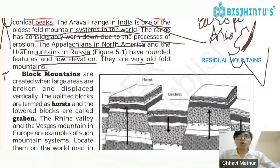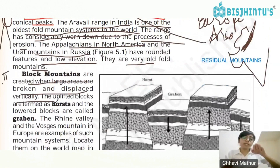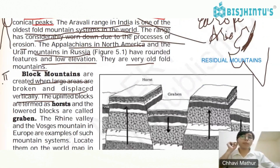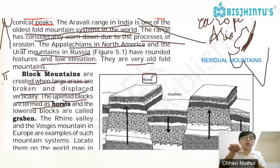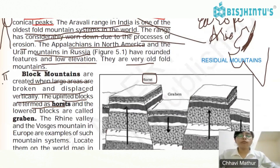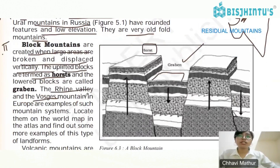Block mountains are created when large areas are broken and displaced vertically. The uplifted blocks are termed horst, and the downward-dropped portions are called graben. The Rhine Valley and the Vosges mountains in Europe are examples of block mountains.